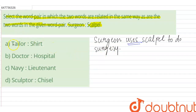If we look at option A, tailor is to shirt — tailor jo hai wo shirt banata hai, just as a surgeon performs surgery. But we need to know what a tailor uses. Shirt jo hai wo end product hai tailoring ka — shirt is not a tool of the tailor, that is why option A is discarded.